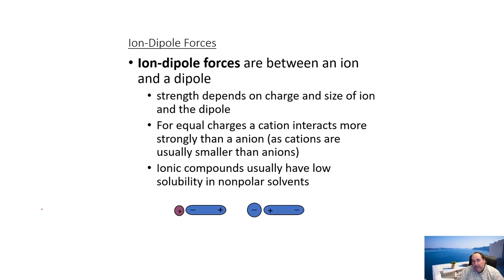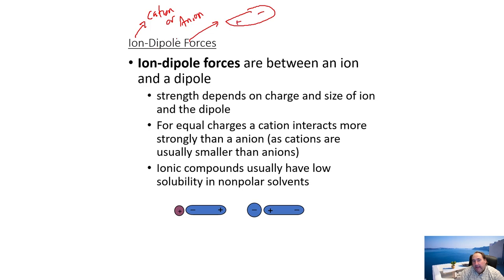Another type of intermolecular force is the ion-dipole force, which is pretty much what it sounds like. Ions are either cations or anions, and the dipole is a polar molecule. A cation is attracted to the negative side of the polar molecule, and an anion is attracted to the positive side. A great example of this is what happens when we dissolve sodium chloride in water.